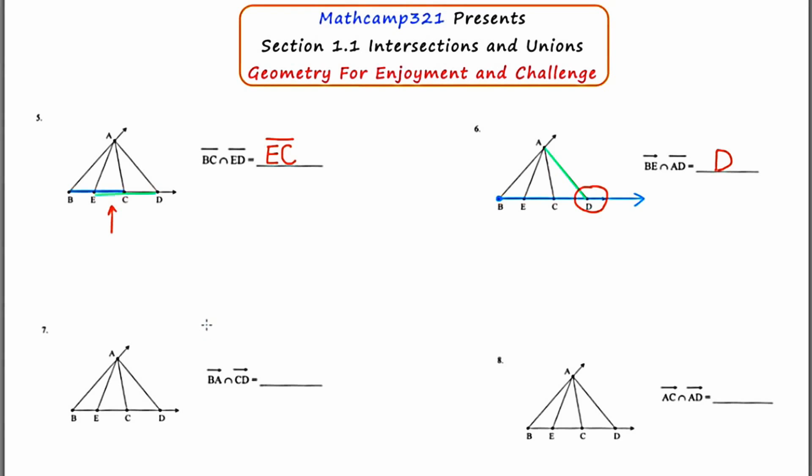Okay, in number seven, they want us to find the intersection of ray BA and ray CD. Let's start with ray BA. This starts at point B and it goes in the direction of A forever. Now let's go to ray CD. This starts at point C and goes in the direction of D forever. Now remembering that intersection means finding the points in common. As I look at my result here, I realize there's no location that is both blue and green at the same time. So this would be the empty set or no solution. So you have a few ways to express this. You could use this symbol to represent no solution. You could do the empty set, which is a set with nothing in it. Or you could actually write the words no solution. I personally like to use this one because it's just the easiest.